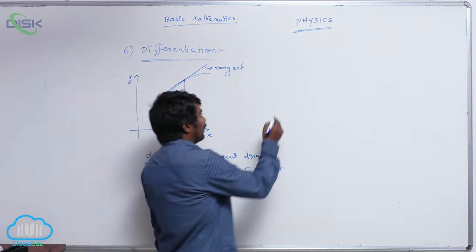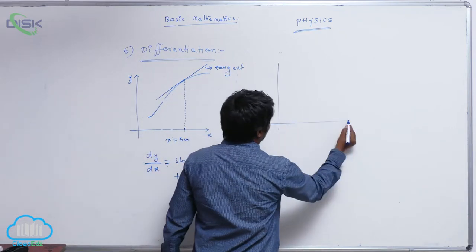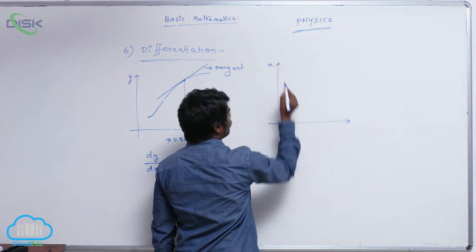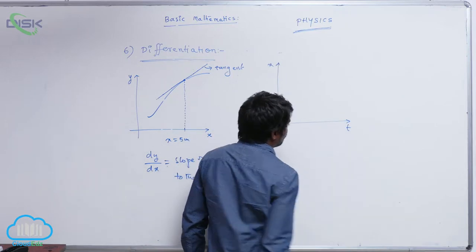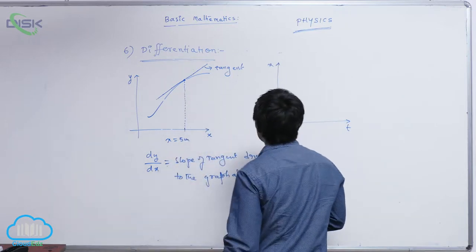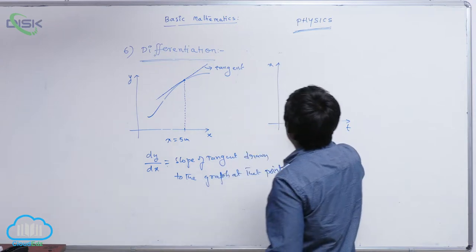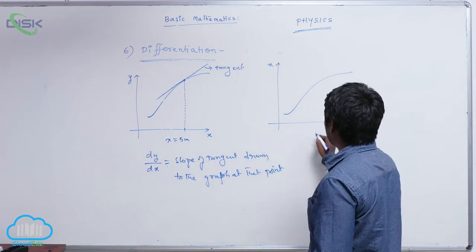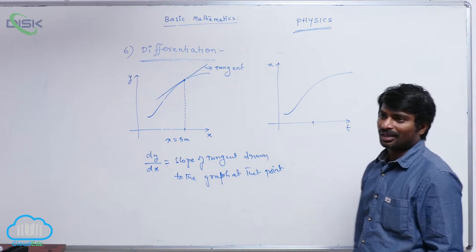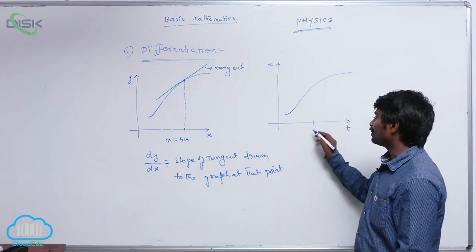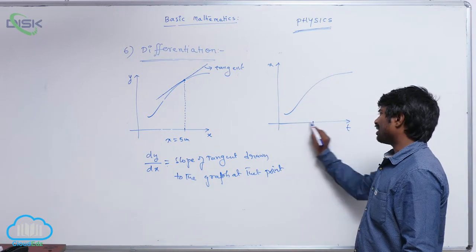The same way suppose if x-t graph is given like this, displacement time graph or position time graph is given and if he asked me to calculate the instantaneous velocity at